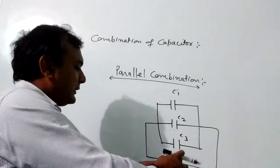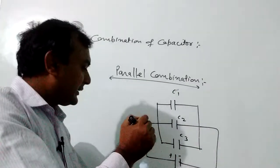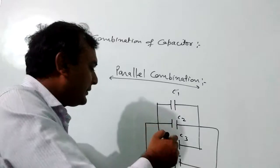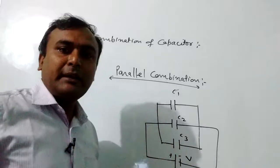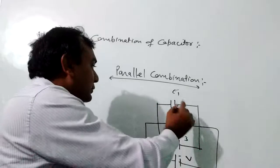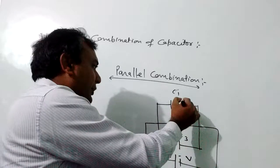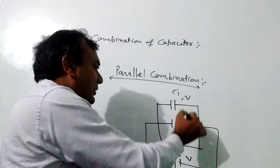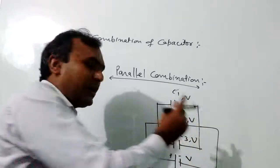When it comes to a V-volt battery, V is the potential of the battery. Connected separately, this is the potential V, this is the potential V — the potential is the same for all capacitors.